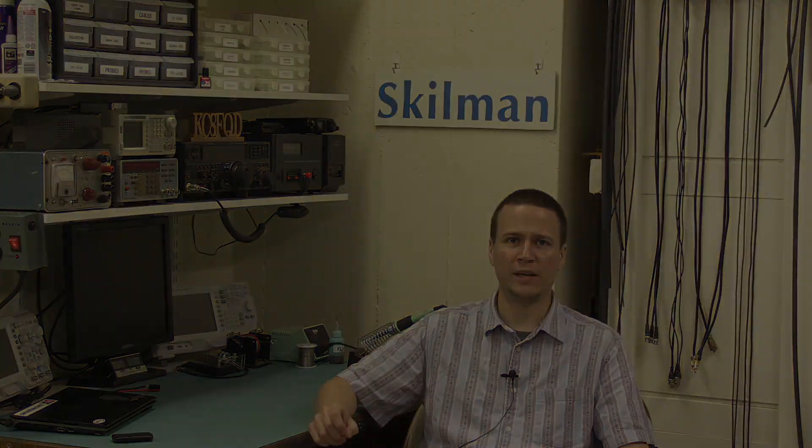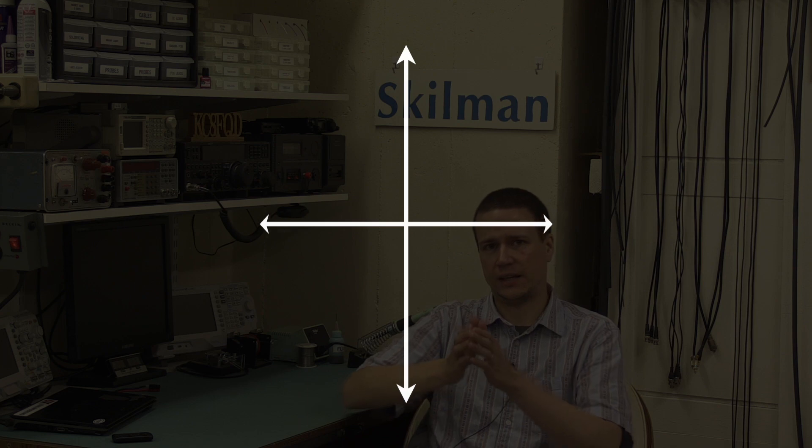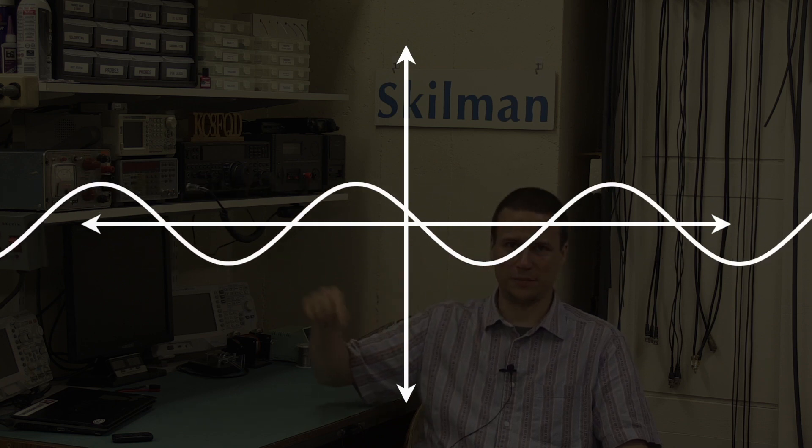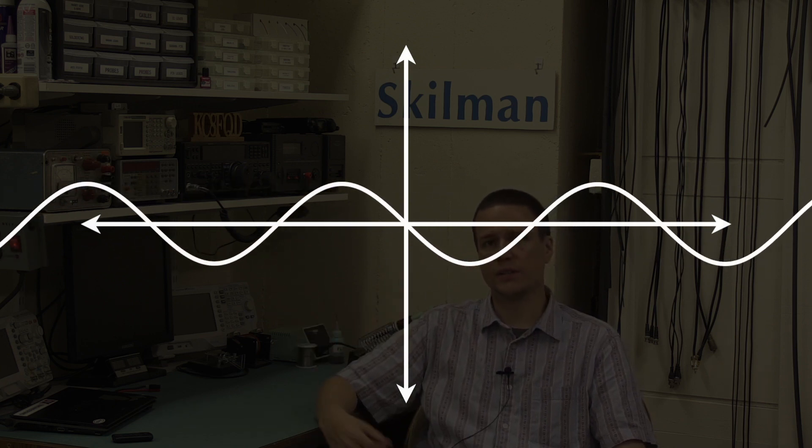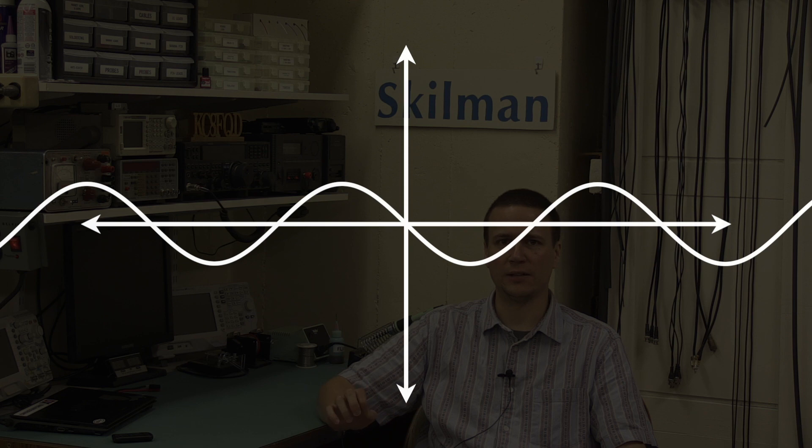Electromagnetic waves propagate through three-dimensional space, which is a little tricky to visualize. So let's look at a simplified visualization. We'll show magnitude of the wave on the vertical axis, and we'll show distance on the horizontal axis. Then the wave looks like this. You can see that at a given moment in time, the wave's magnitude has peaks and valleys that repeat periodically across space.